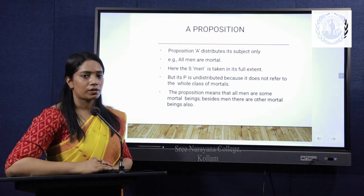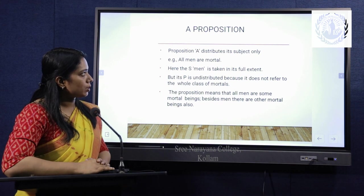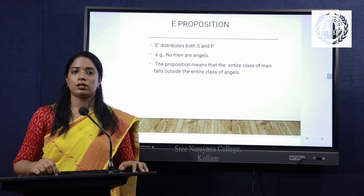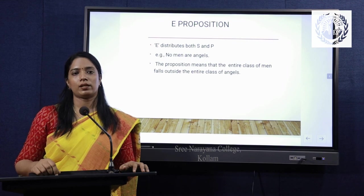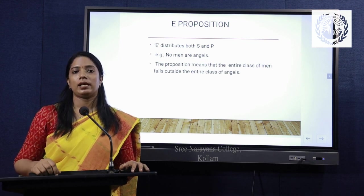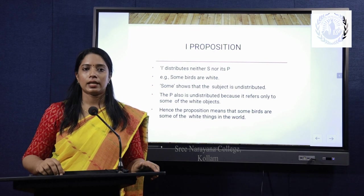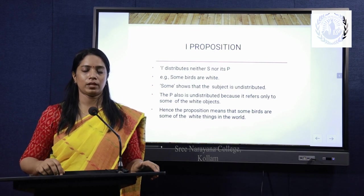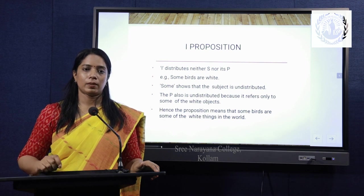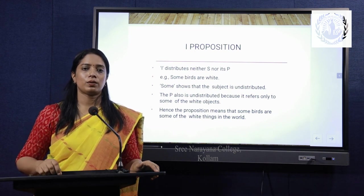Now we are moving to the distribution of categorical propositions, namely AEIO. In an A proposition, the subject term is distributed. For example, 'all men are mortal.' In an E proposition, both the subject term and predicate term are distributed because it completely excludes each other and both terms are used in their complete sense. In an I proposition, neither the subject term nor the predicate term is distributed. For example, 'some words are white.' The subject term is not distributed because it commences with the term 'some,' and the predicate term is also undistributed because it is not used in its complete sense.